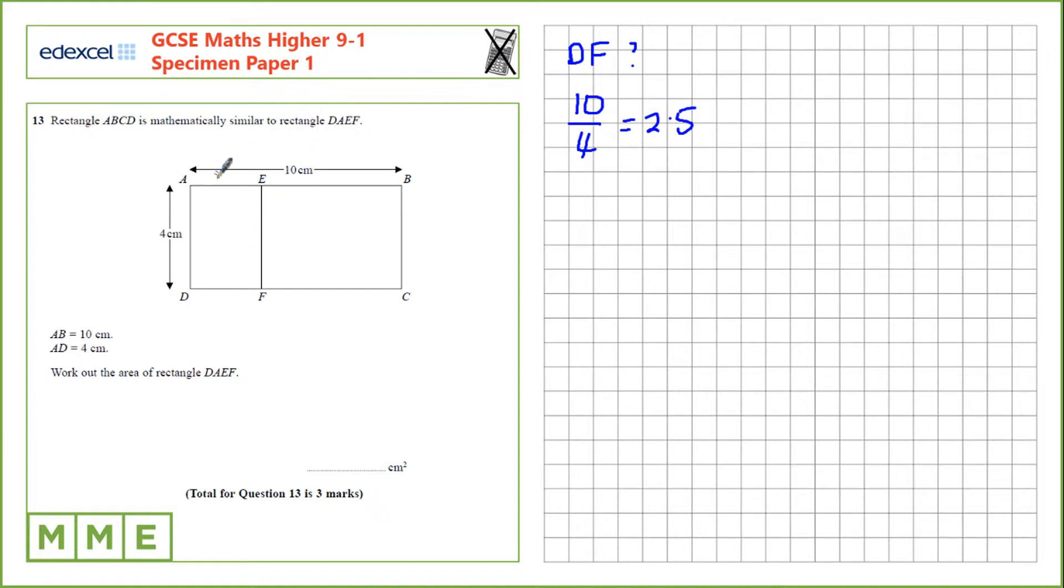On the large rectangle, we can figure out this side length here, AE. The short side length on the large rectangle is 4. So in order to find out the short side length on the small rectangle, we take 4 and divide by the scale factor, which gives us 1.6.